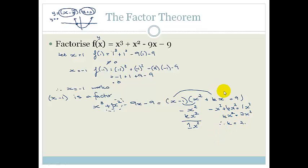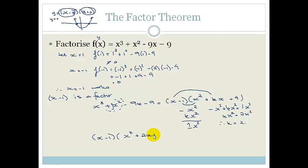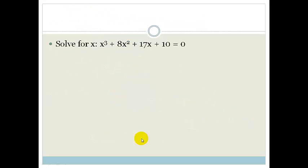Therefore, writing that back in, the factors of this polynomial can be written as (x plus 1)(x squared plus 2x plus 9). And that's it — that's as far as we can factorize this. Not too bad. Let's look at another example.